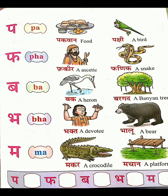PHA, P-H-A. 'Phakhera' — a stick. 'Phanik' — snake. BA, B-A. 'Bak' — a heron. 'Bargat' — banyan tree.